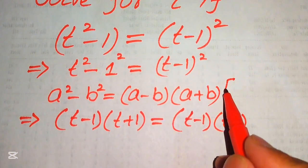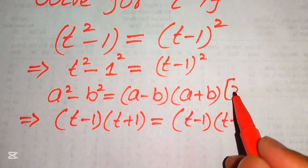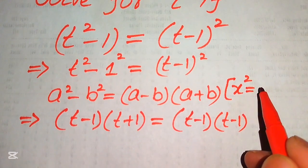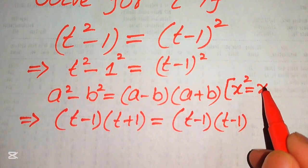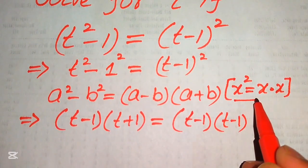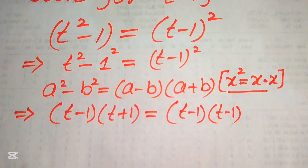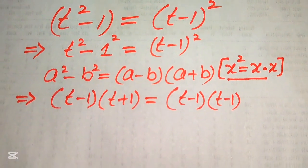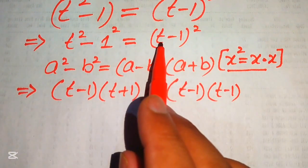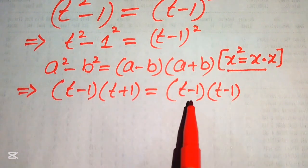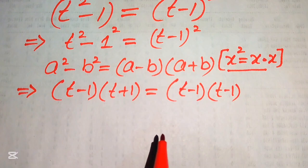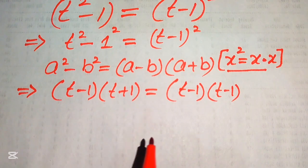We use the rule that x squared equals x multiplied by x, so we break t minus 1 whole square as t minus 1 multiplied by t minus 1.